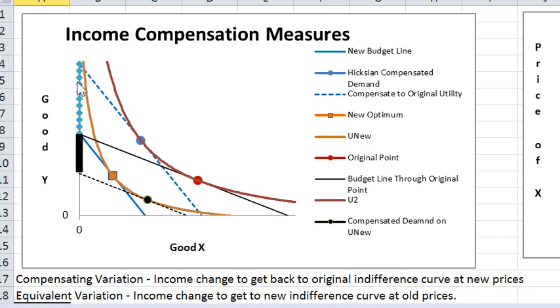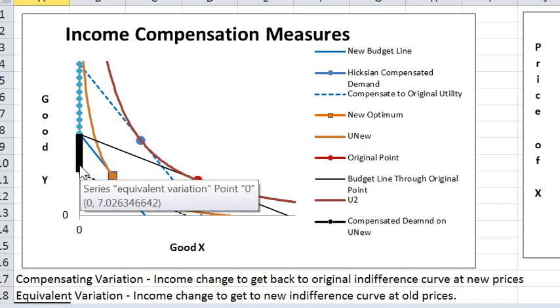This height need not equal this height, and indeed in this case the compensating variation is bigger than the equivalent variation.